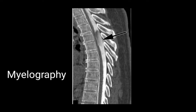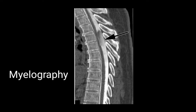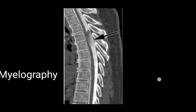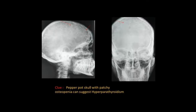This is an image of myelography. The vertebral column is shown with anterior and posterior segments and the spine in between. The spine appears white (stained with contrast), and in between there is a filling defect due to an obstruction. Myelo refers to the spinal cord.